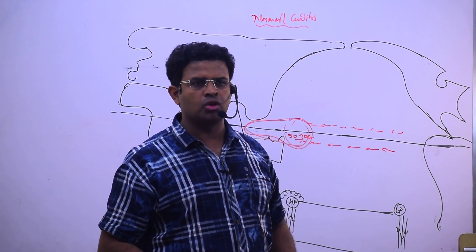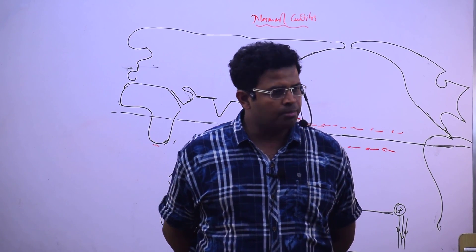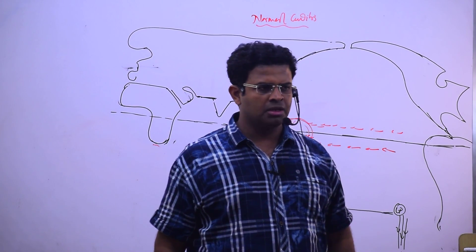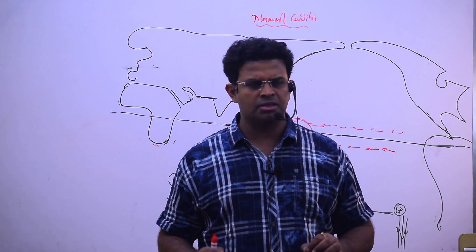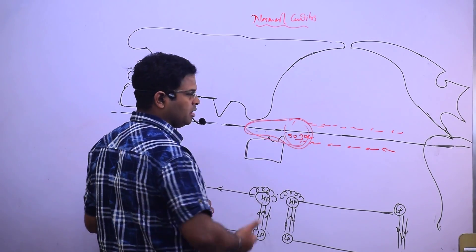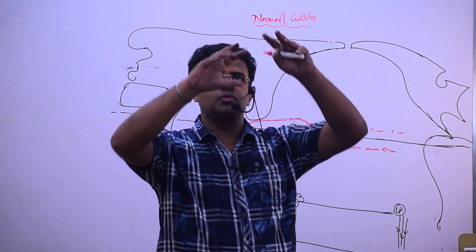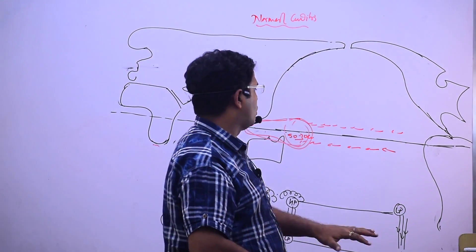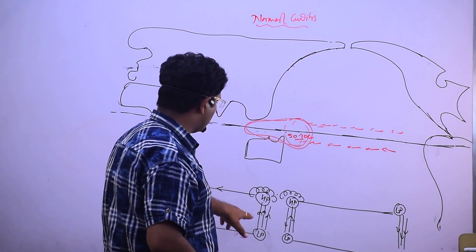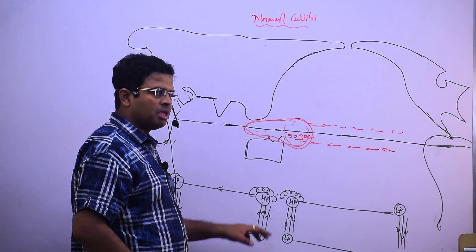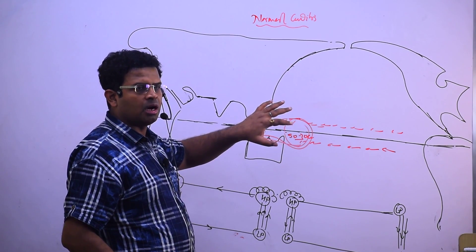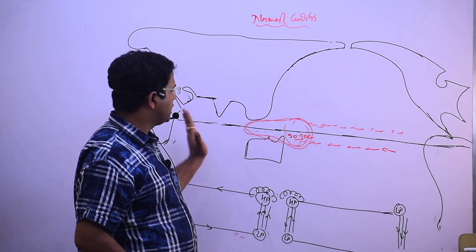Over some period of time, the North Equatorial Current and South Equatorial Current in the Pacific are able to increase the level of water to a height of 50 to 70 centimeters — this happens over 1, 2, or 3 years. They release a large amount of warm water vapor into the atmosphere, causing good rainfall in the region of Australia and nearby Southeast Asian countries. This creates high pressure in the upper atmosphere near western Pacific and eastern Indian Ocean.